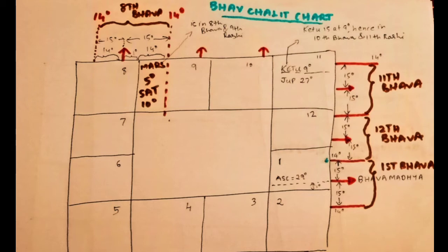The Rashi chart has the twelve Rashis numbered as 1, 2, 3, 4, 5, 6, 7, 8, 9, 10, 11, 12, with the first Rashi starting from the sign of Leo or Sima.